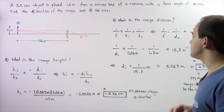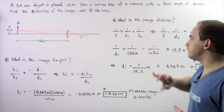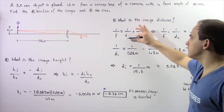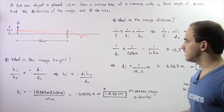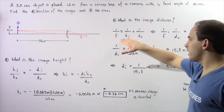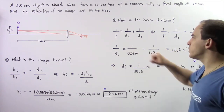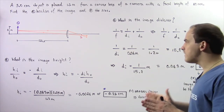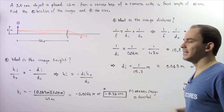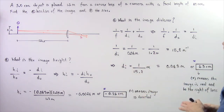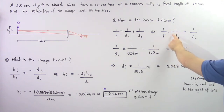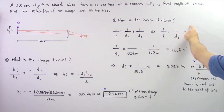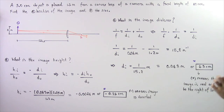The thin lens equation states: 1 divided by the focal length is equal to 1 divided by the image distance plus 1 divided by the object distance. Rearranging, we bring known values to the left side and unknowns to the right side: 1 divided by the focal length minus 1 divided by the object distance is equal to 1 divided by the image distance.